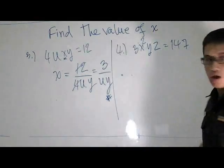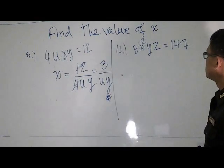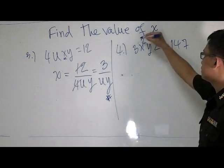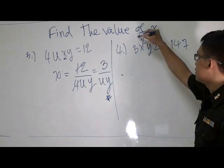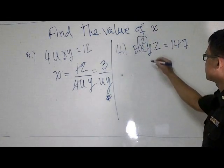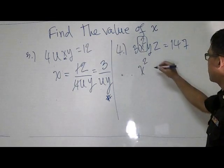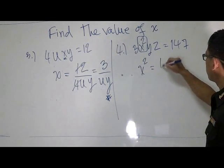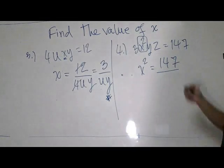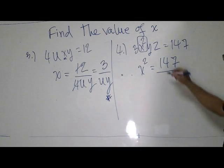The next problem is problem number 4. We have x squared — 1 x squared plus 147.